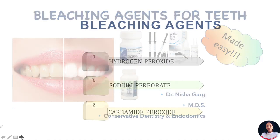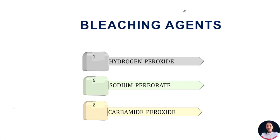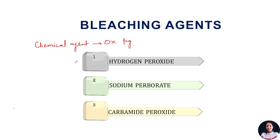As we have already discussed, tooth whitening or bleaching of the teeth is basically lightening of the color of the tooth, and it is done by applying a chemical agent. That chemical agent oxidizes the organic pigmentation present in the tooth. Various materials are available nowadays to bleach the teeth. The basic ingredients of tooth whitening agents are hydrogen peroxide, sodium perborate, and carbamide peroxide.